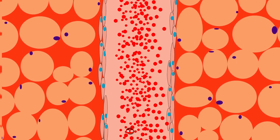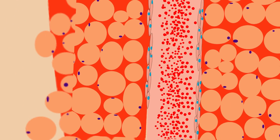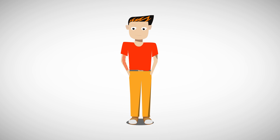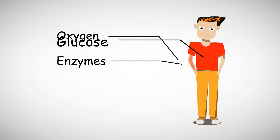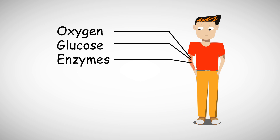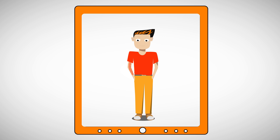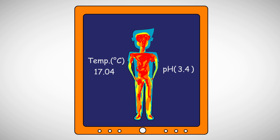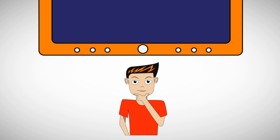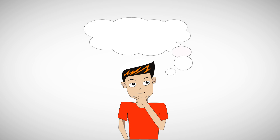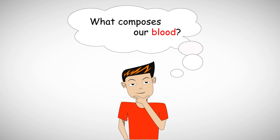Blood has many different functions in the body. Most of them include transportation of different nutrients including oxygen, glucose, and enzymes. It also functions for protection, temperature, and pH balance. But have you ever wondered what really composes our blood?